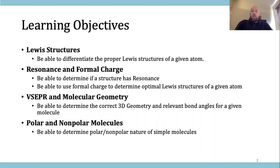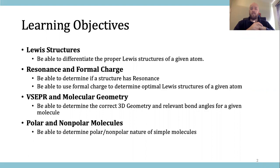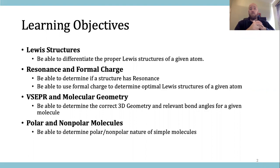So our learning objectives here: number one is to draw Lewis structures. This is the bulk of where this chapter is going to go. If you're going to be studying this chapter, the Lewis structures is probably one of the biggest sections to focus on. We also want to be able to recognize and use formal charges to determine structures. On the test, you are not going to have to draw structures — you have to be able to recognize the proper structures when drawn, and be able to recognize when there is resonance.